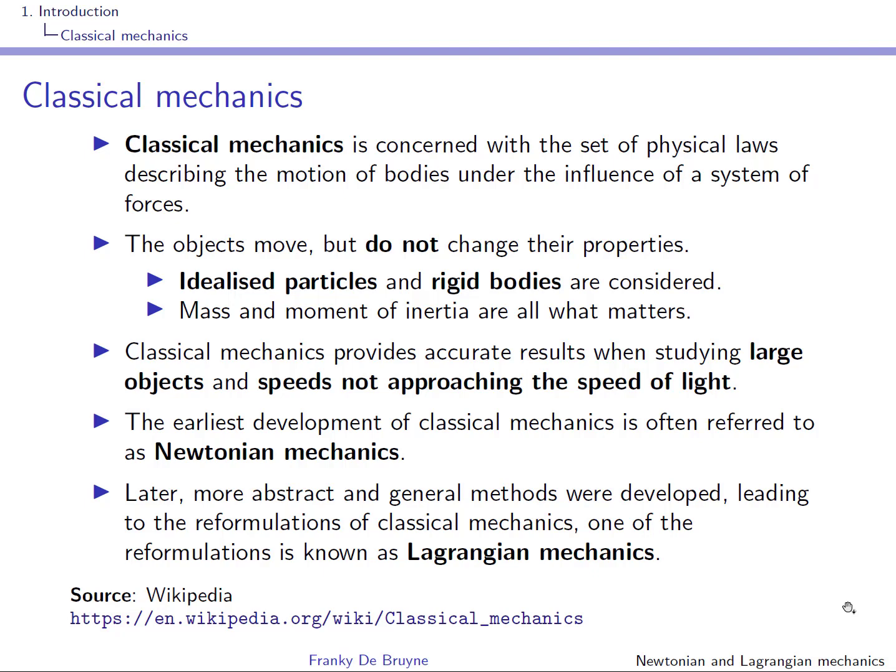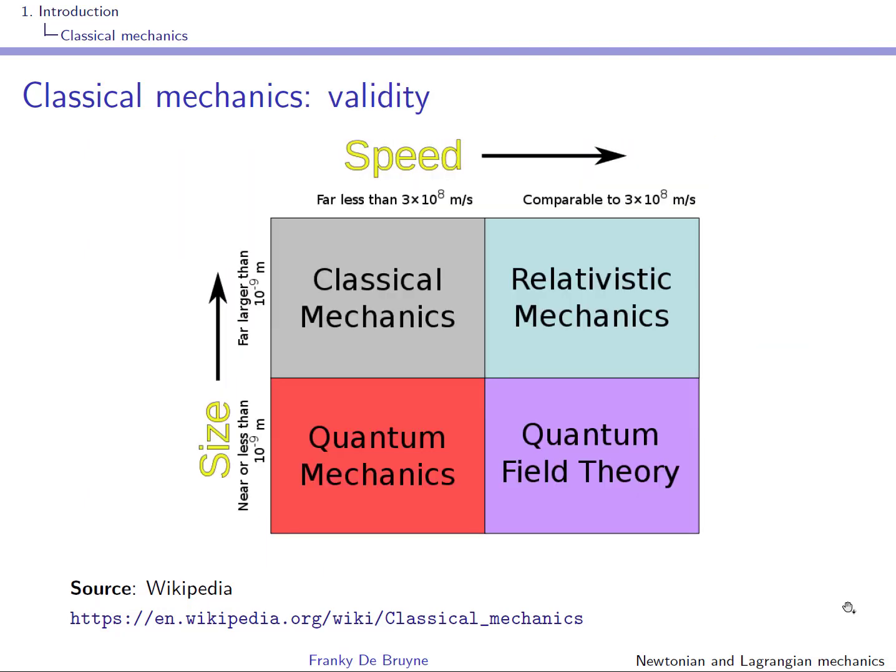The earliest developments of mechanics concern Newtonian mechanics. Later on in history, reformulations were proposed, and one such formulation that we will consider in the course is Lagrangian mechanics. We will stick to classical mechanics. If the speed of the object approaches the speed of light, then you have to take into account relativity. And if the size of the object becomes too small, then you have to take into account quantum mechanics. Of course, this goes beyond the scope of this course.